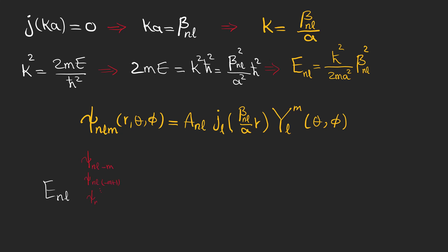Pay attention that for each energy level, we have 2L plus 1 different m's, and when our particle is in the energy level of E_nL, there are 2L plus 1 wave functions associated with it. In other words, we can say that our energy levels are 2L plus 1-fold degenerate.